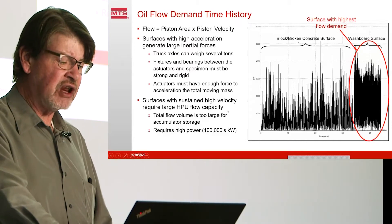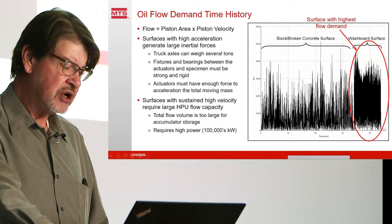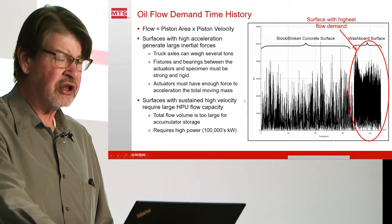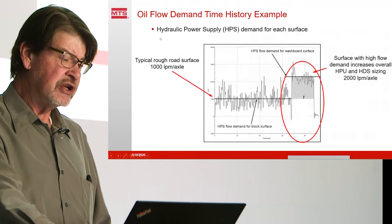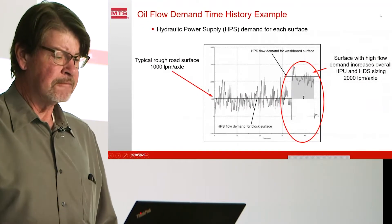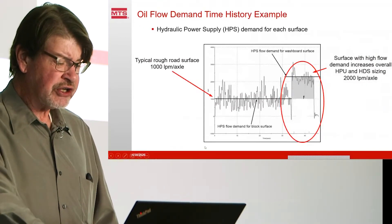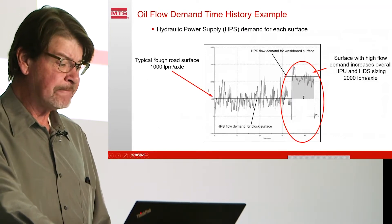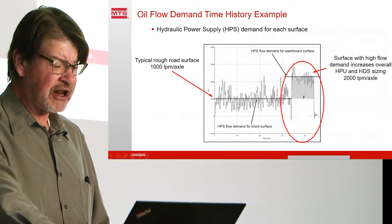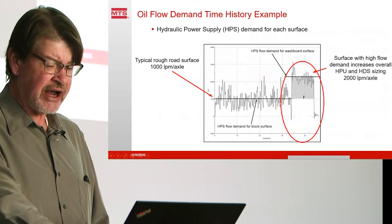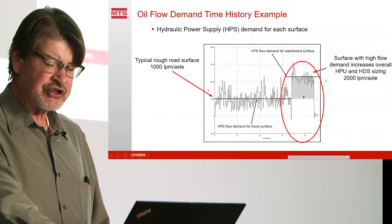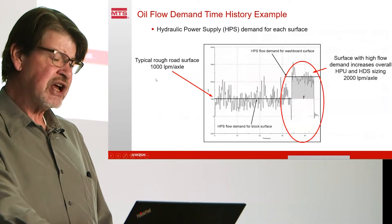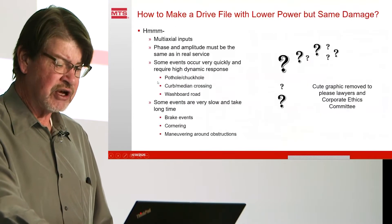Surfaces with sustained high velocity require a large HPU. Sometimes we require very high power — like hundreds of thousands of kilowatts. In fact, one system we installed was on the megawatt order. Looking at the overall HPU demand, which equates directly to power into the building, a typical rough road surface is about 1,000 liters per minute per axle, whereas the washboard surface is about 2,000 liters per minute per axle. That means I have to double the size of the pumps to run that system in real time.